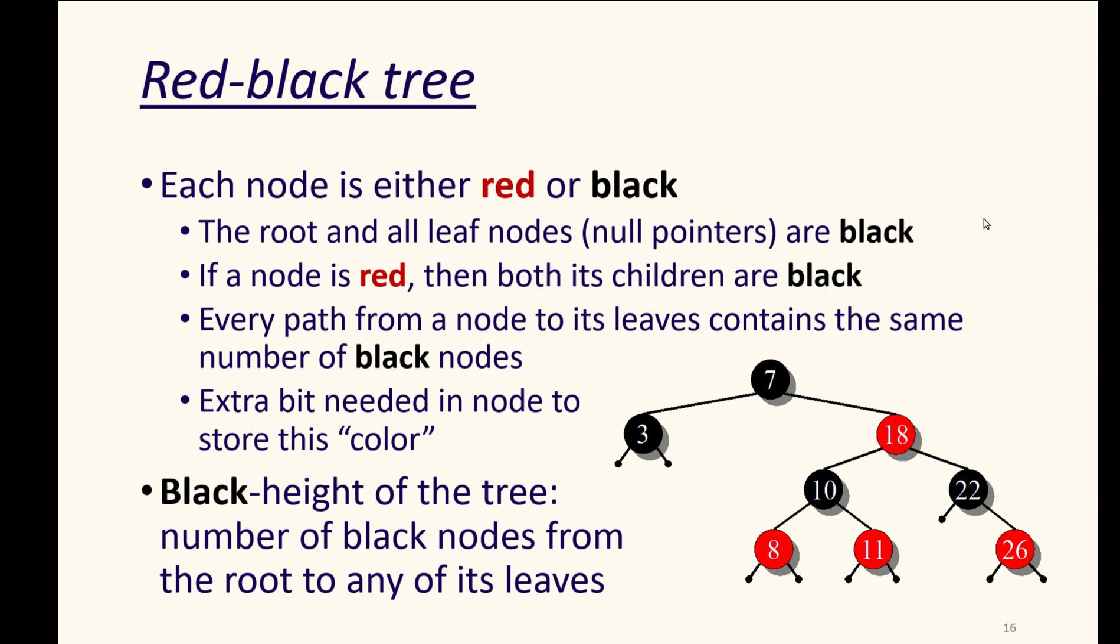And again, that gives us a close approximation of the equal depth piece that we were looking for in B trees and 2-3-4 trees.